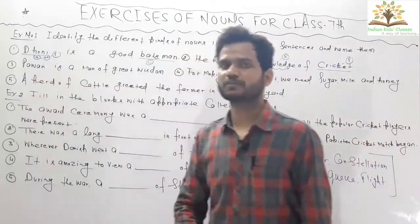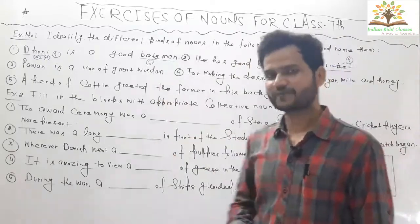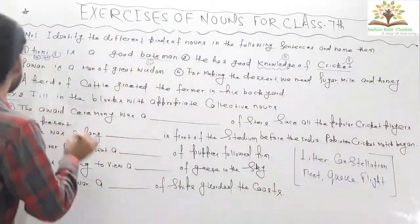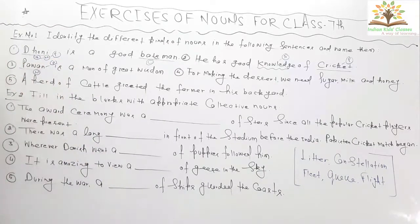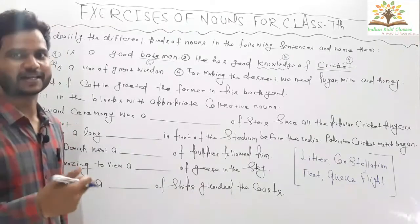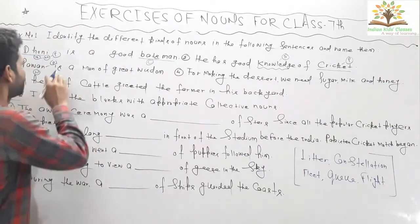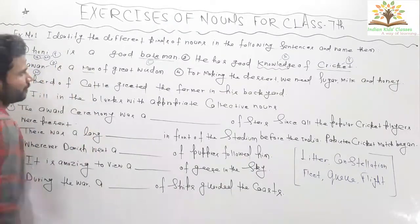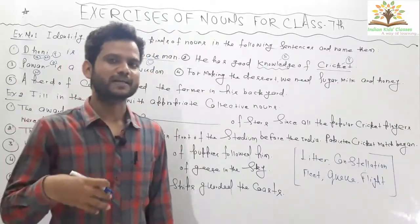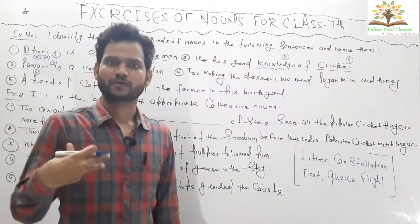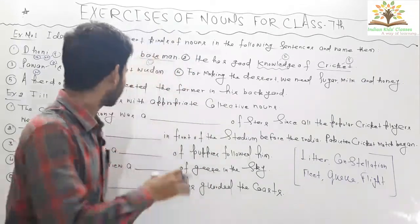Question number three: 'Pavan is a man of great wisdom.' Pavan is a proper noun because it is the name of a specific person. Moving on — man is a common noun because man can be anyone: your father, your brother, your uncle. That's why man is a common noun.